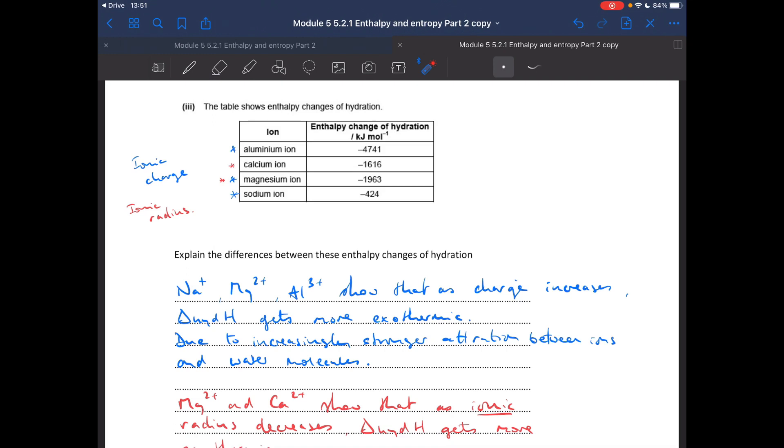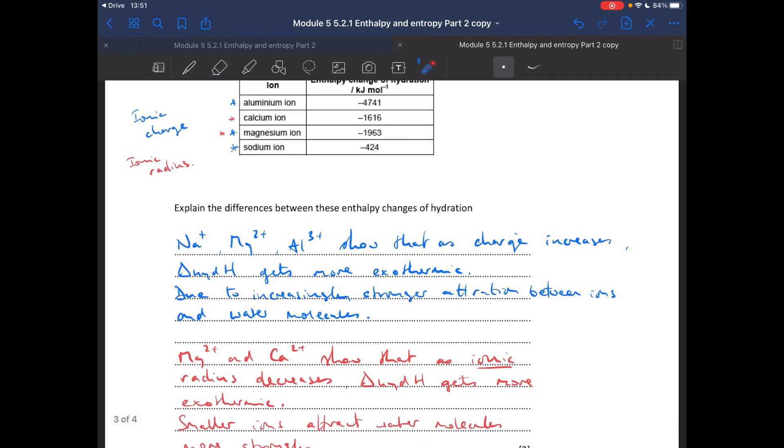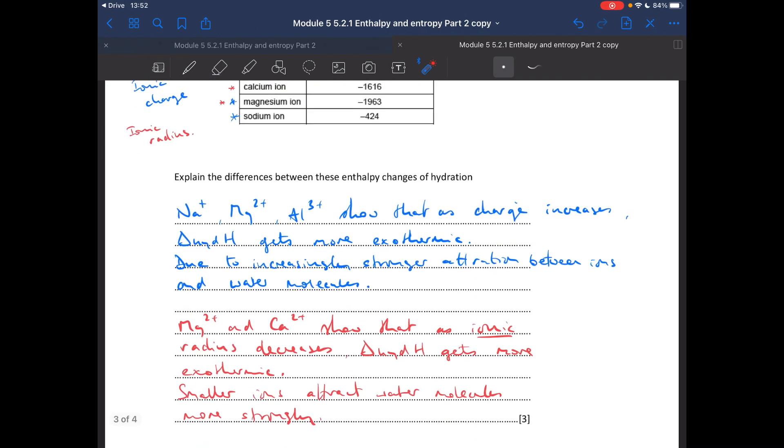And then just the ionic radius. The Mg2+ and Ca2+ ions show that as the ionic radius, not atomic radius I see that quite a lot unfortunately, as the ionic radius decreases, the enthalpy change of hydration gets more exothermic. Smaller ions attract water molecules more strongly.